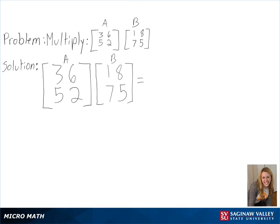Our problem is to multiply matrix A by matrix B. To be able to multiply matrices, the number of columns in the first matrix has to equal the number of rows in the second matrix. We can see here that this is the case since they both have 2.